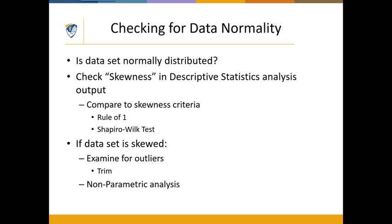We typically use the skewness score as a quick and easy way to determine if our data is normally distributed. One of the more common rules is known as the rule of one: if the skewness score is between minus one and plus one, we consider the data normally distributed. If the skewness score is greater than positive one or less than negative one — such as negative 1.5 or positive 1.5 — we would consider the skewness large enough that the data is no longer normal. That works in most situations.